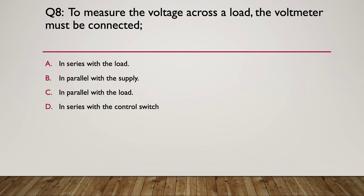Eight, to measure the voltage across a load the volt meter must be connected how? How are you going to connect your volt meter? A, in series with the load. B, in parallel with the supply. C, in parallel with the load. Or D, in series with the control switch. Pause here while you think about it. The hint, as often I get my students to do, is to draw a simple circuit with a volt meter and how you put the volt meter in the circuit then think about how is it connected in the circuit. The answer for question eight is C, in parallel with the load. So you're always, always connecting a volt meter in parallel.